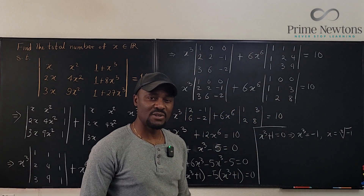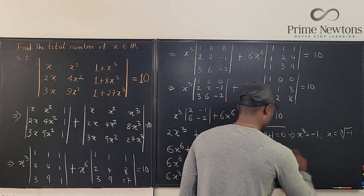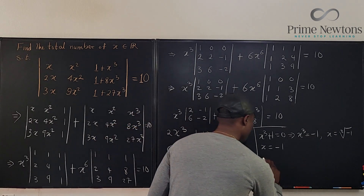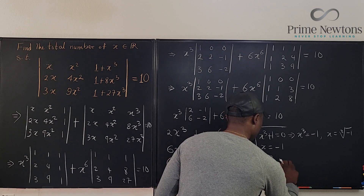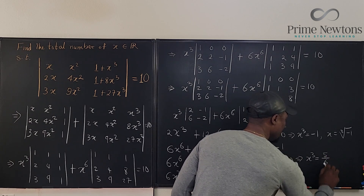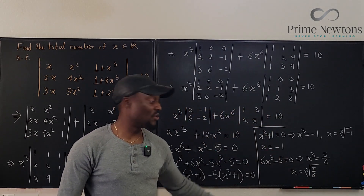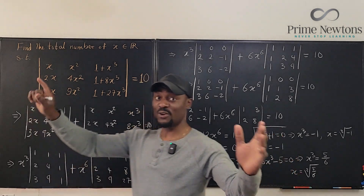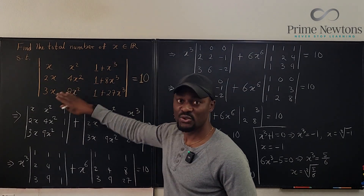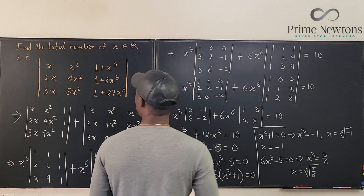From x³ = -1, the real solution is x = -1 (the other two cube roots are complex). From 6x³ - 5 = 0, we get x³ = 5/6, so x = ∛(5/6), which is one real value. The question asks for the total number of real values of x — we found one from the first factor and one from the second, so the total number of real solutions is 2.